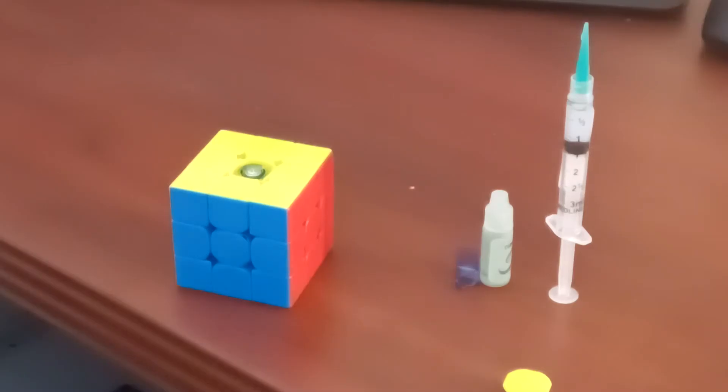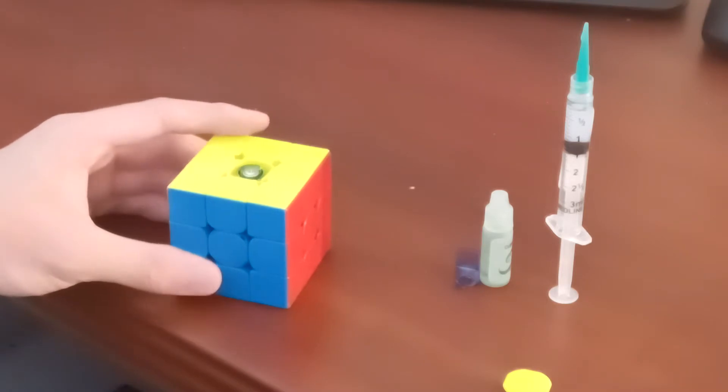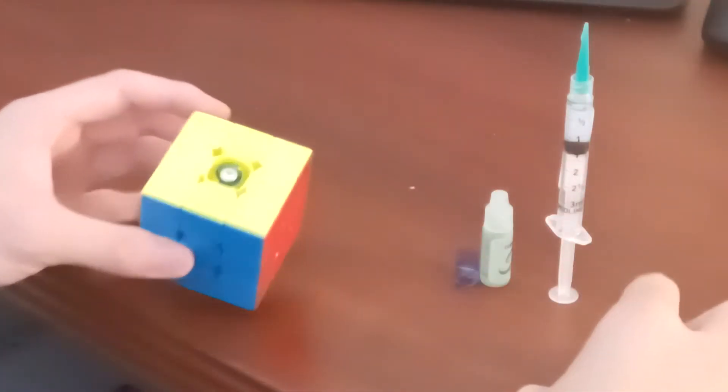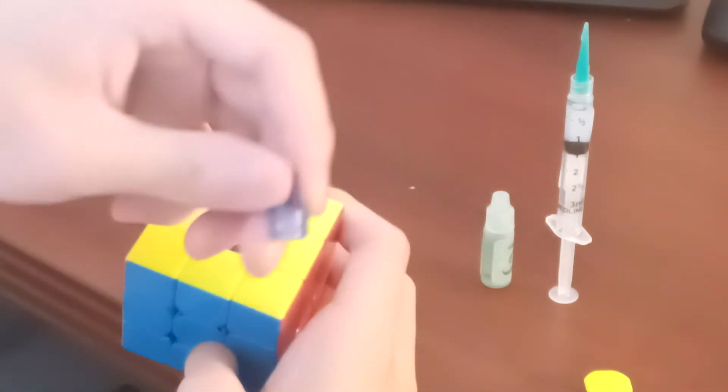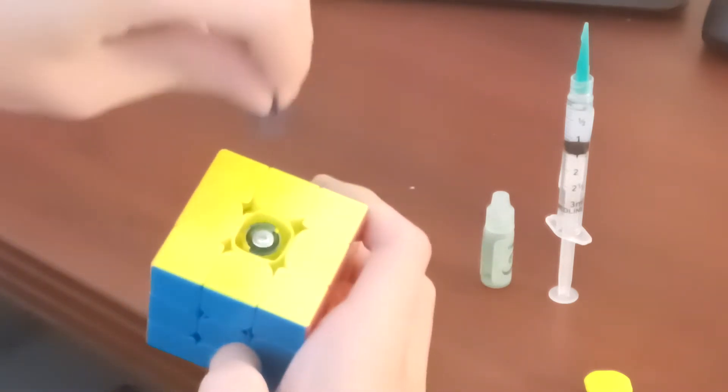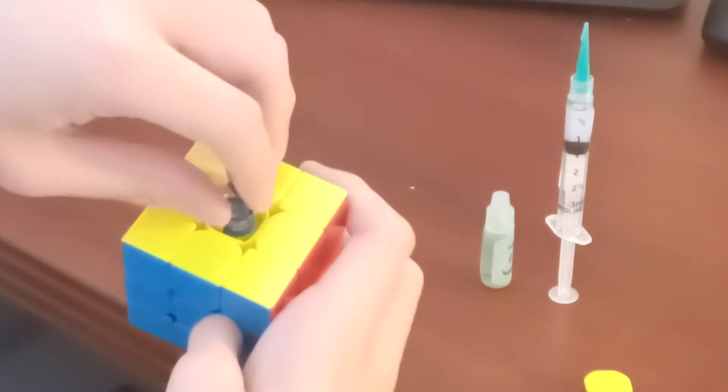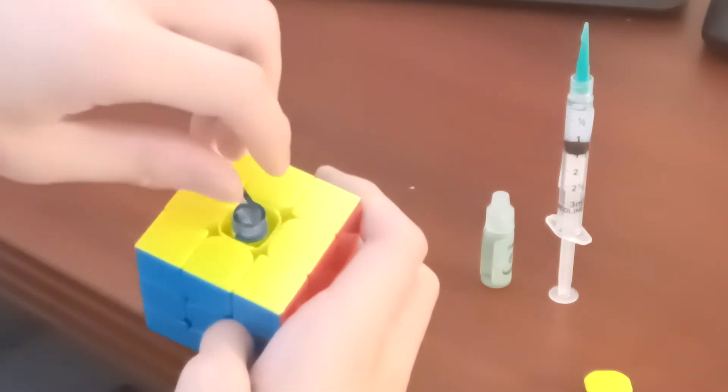In this next step you'll be dealing with the center cap and the screws. So you want to adjust the spring compression so it's at setting 5. To do that, you'll just take the tool or use your fingernail and turn the blue cup inside five clicks.